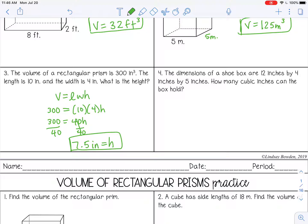All right, and then number four, the dimensions of a shoebox are 12 inches by four inches by five inches. How many cubic inches can the box hold? All right, so a shoebox is a box, it's a rectangular prism. So length times width times height, or 12 times four times five.